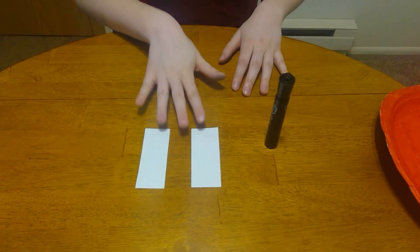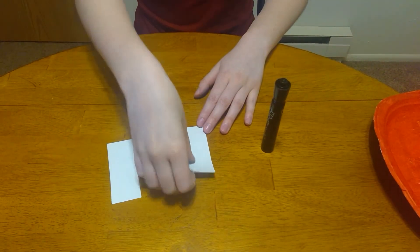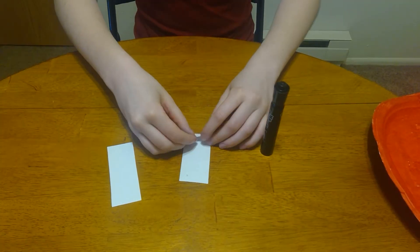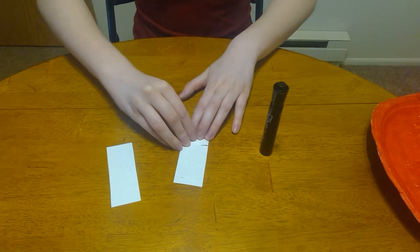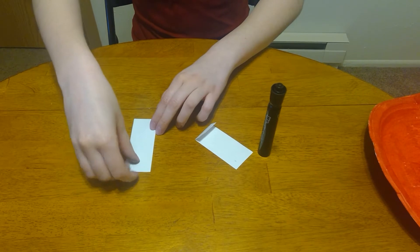For the next step, you will need those two rectangles and a black marker. You're going to take your one rectangle and fold over the end of it just a little bit, just like that. And you're going to do that to the other one.